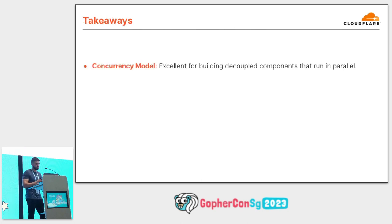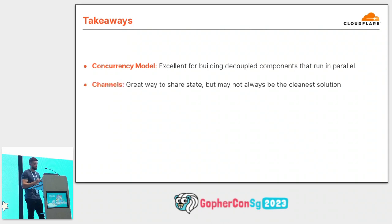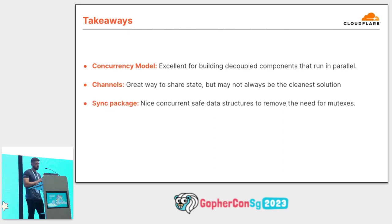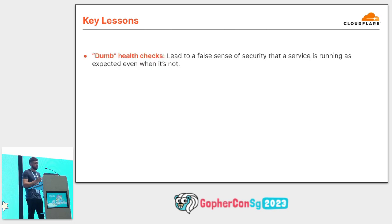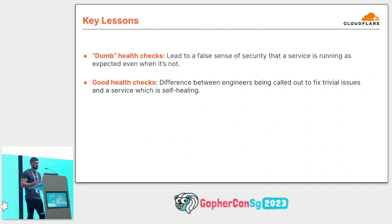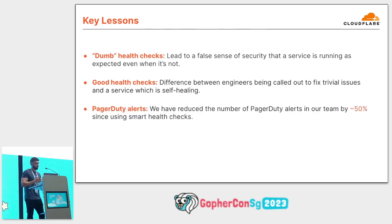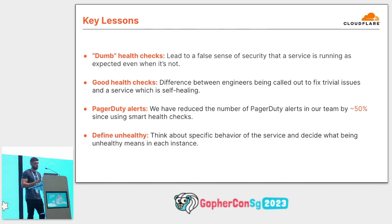Key takeaways: Go's concurrency model is excellent for building decoupled components that run in parallel. Channels are a great way to share state and decouple Go routines, however depending on the use case they might not always be the cleanest approach. The sync package has great concurrent-safe data structures that remove the need for thinking about mutexes. You should never spin up a Go routine and forget about it — it's important to keep track of its lifetime. On the health check side: naive health checks can give a false sense of security that an application is working even when it's not. Proper health checks can be the difference between availability and incidents. Rolling this out reduced our PagerDuty incidents by 50%. It's important to think about the specific behaviour of a service and decide what unhealthy means instead of just checking that dependent services are connected.